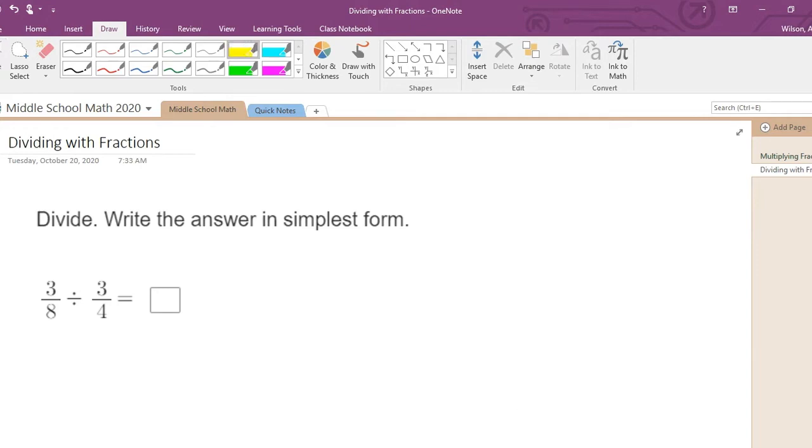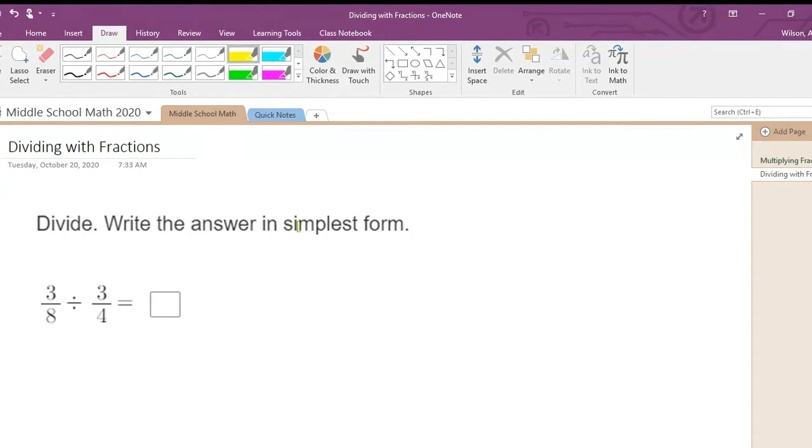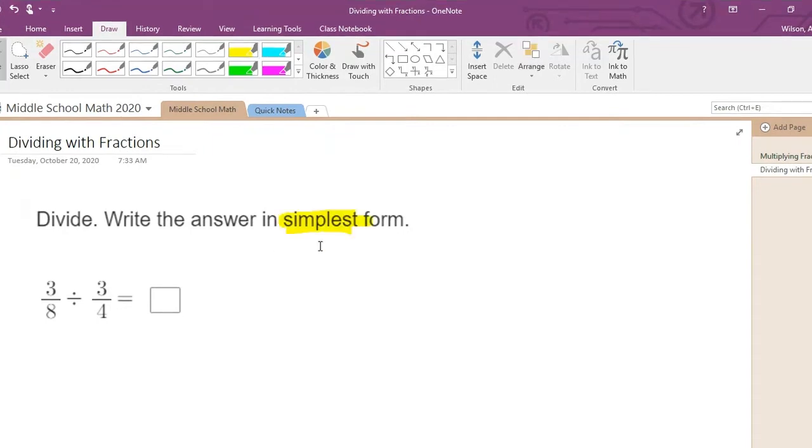All right, so we are going to be dividing with fractions and making sure to always put our quotient or answer to our division problem in simplest form. I call that the scary S word. So we have three eighths divided by three fourths.